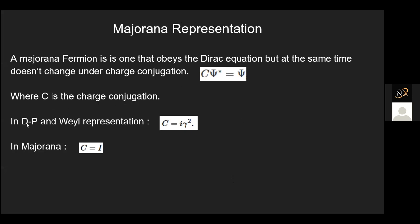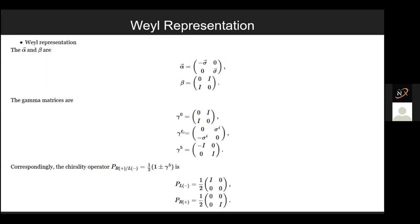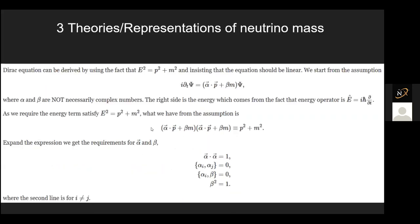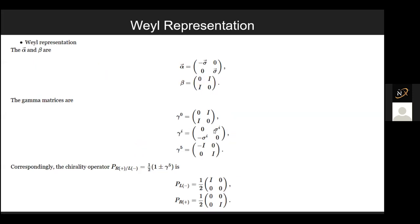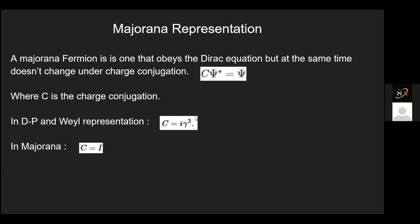Charge conjugation is an operator — in normal Dirac and Weyl representation that would be i times gamma-2. It's the same for both Dirac and Weyl because gamma-i is the same. But the Majorana condition says that the charge conjugation operator is in fact the identity matrix, meaning a charge-conjugated particle is the same as the particle itself.